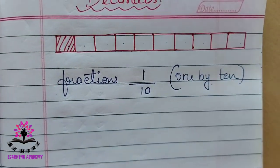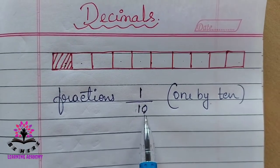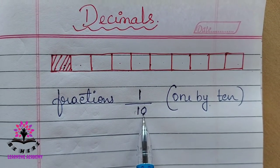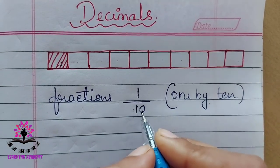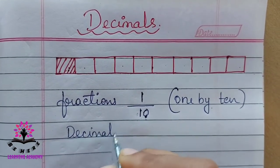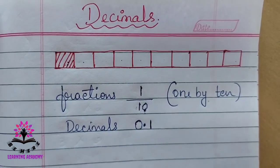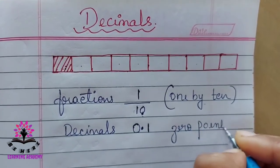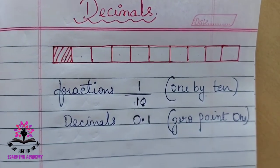We read it as one by ten. Now, how to write this in the form of decimals? There is one zero in the denominator, so in tenth place there is a number. You can write it as 0.1. We read this as 0.1.